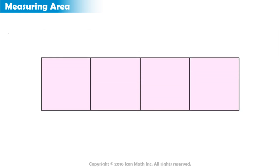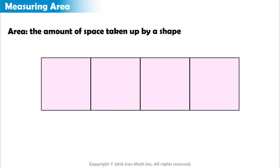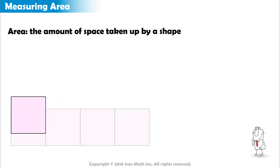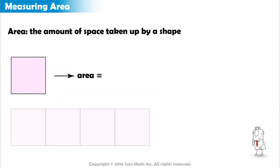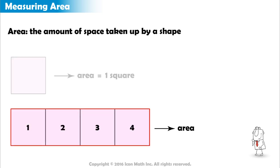We use the term area to refer to the amount of space taken up by a shape. What units do we use to measure the area? Maybe we can say that the area of this shape equals one square, and the area of this one is equal to four squares.